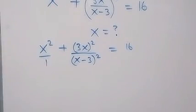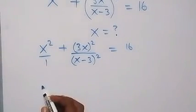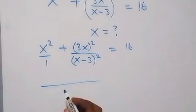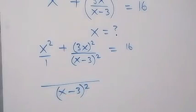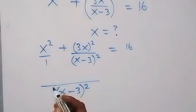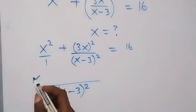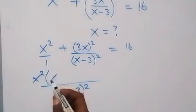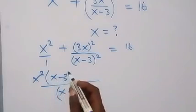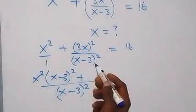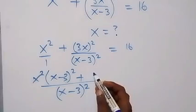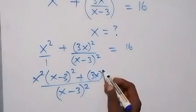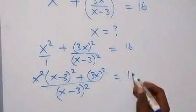Let's bring this together as one fraction. On the left-hand side, the common denominator is (x - 3)², and one goes here as (x - 3)², then times x². So we have x² times (x - 3)² plus 1 times 3x² equals 16.